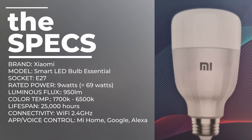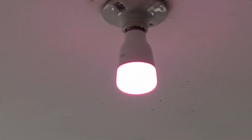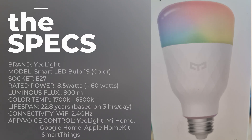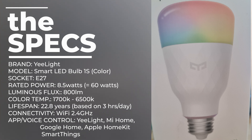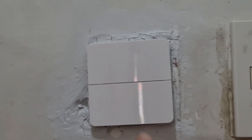The smart bulb in this room is the 9-watt Mi Smart LED Bulb Essential, capable of 950 lumens of luminous flux. This smart bulb is easy to add and pair with the Mi Home app and will automatically appear on the Google Home app. The 8.5-watt bulb in the other room is the Yeelight Smart LED Bulb 1S, which has a lower luminous flux of 800 lumens. It's also easily paired with the Mi Home app but will not automatically appear on Google Home unless you already link your Yeelight account to Google Home.